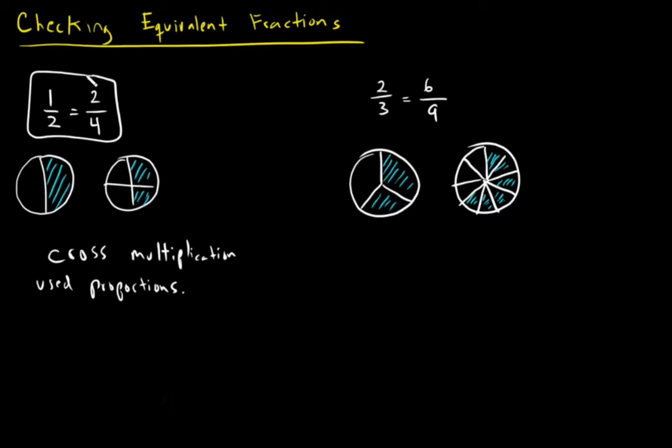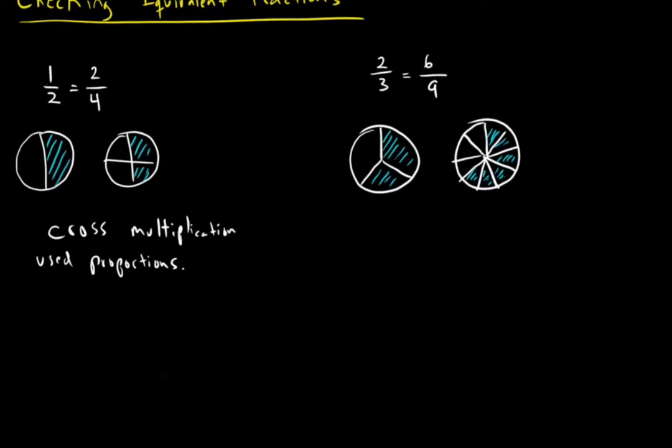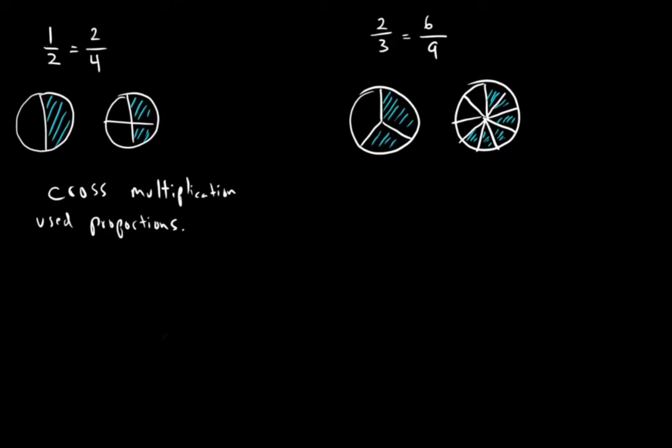You can only use this technique if you have equivalent fractions, or again, a fraction equal to another fraction. Now, the way cross multiplication works is you actually draw a cross, and you multiply. That's like the name of it, so it's kind of easy to remember. It has cross and multiplication. Again, this is just a technique to check if they are equivalent. What they're asking you to do is to see if they're equivalent. So you still have to answer the question: are they equivalent, yes or no? This is just a technique to check if they're equivalent.